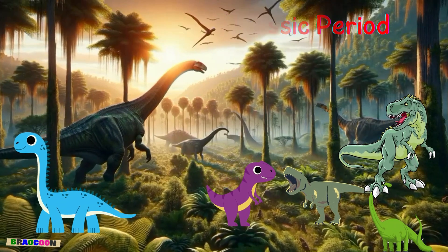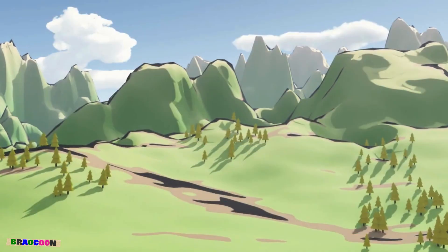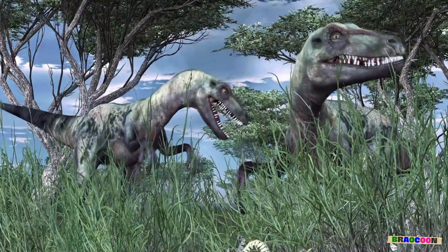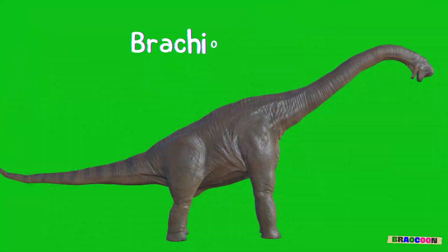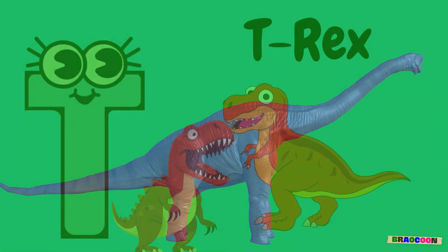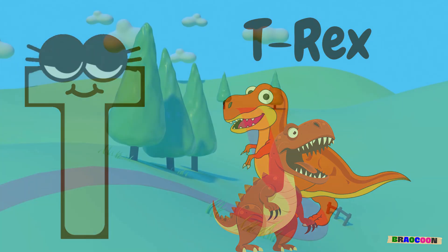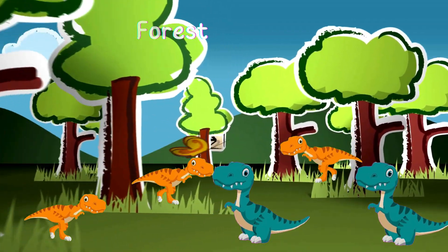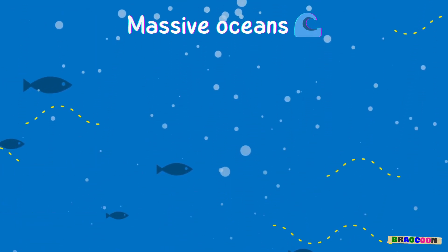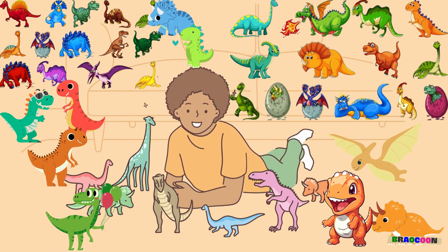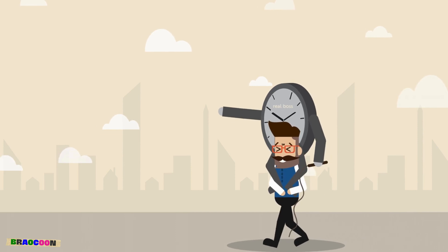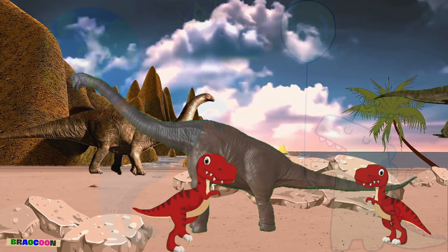Stage 3 uncovers the Jurassic Period. The Jurassic Period was a really long time ago — a part of Earth's history when dinosaurs ruled the land. Picture big dinosaurs with long necks like Brachiosaurus and fierce ones like the T-Rex. It was a time when the world looked a bit different too, with lush forests, massive oceans, and lots of amazing creatures roaming around. Think of it as a really cool time when dinosaurs were the kings and queens of the Earth.